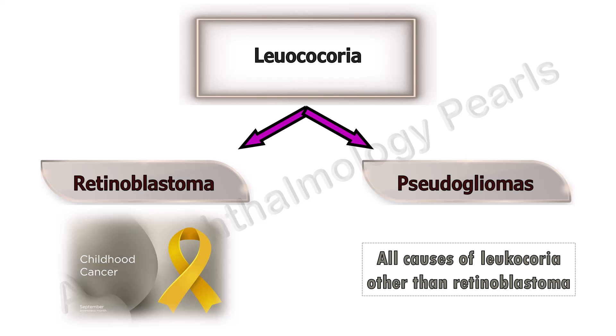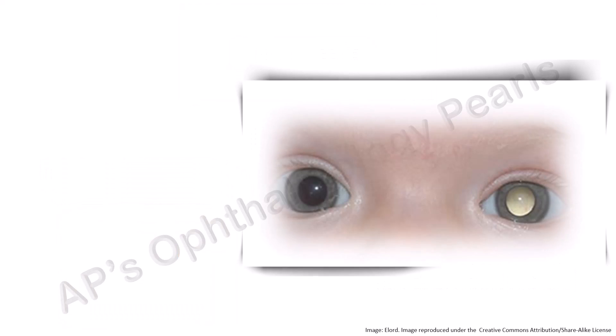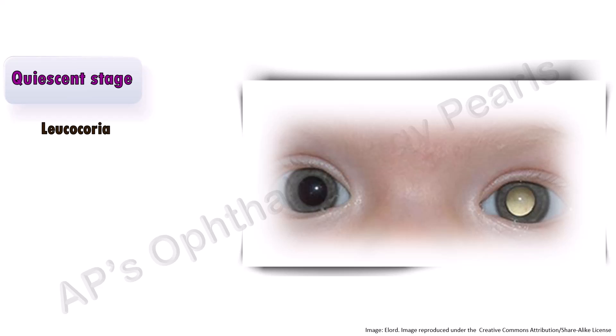Leukochorea, Retinoblastoma, and Pseudogliomas are all important theory questions in the examination and are also asked frequently in the VIVA. Coming to Retinoblastoma, Leukochorea is one of the most important manifestations of the quiescent stage of Retinoblastoma, and it may be accompanied by ocular deviation.